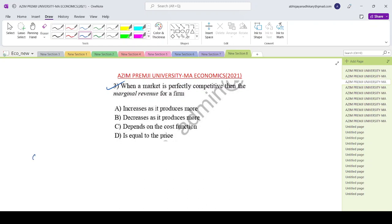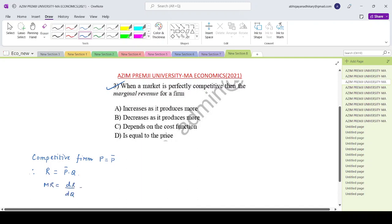So what happens in a competitive firm? In a competitive market, the firm is a price taker. So for a competitive firm, p is set at the market determined p bar. It's a parameter, it cannot change it. So what is the revenue for the firm? It's p bar times q. So what is marginal revenue? It is dR/dq which is p bar. And hence your option is option D.